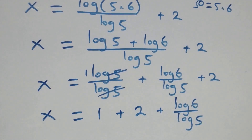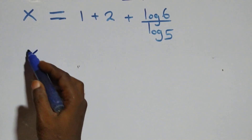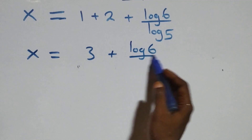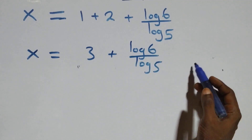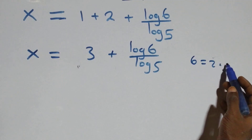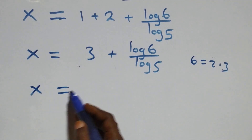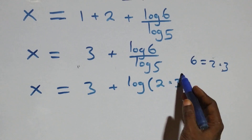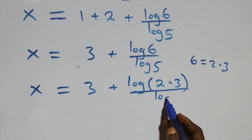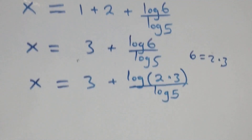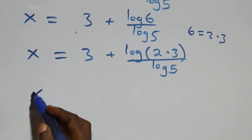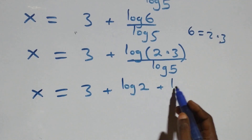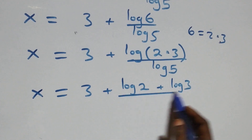This becomes x equals 3 plus log 6 over log 5. We can write 6 as 2 times 3, so x equals 3 plus log(2 times 3) over log 5. Applying the logarithm product rule, this becomes x equals 3 plus log 2 plus log 3, all over log 5.